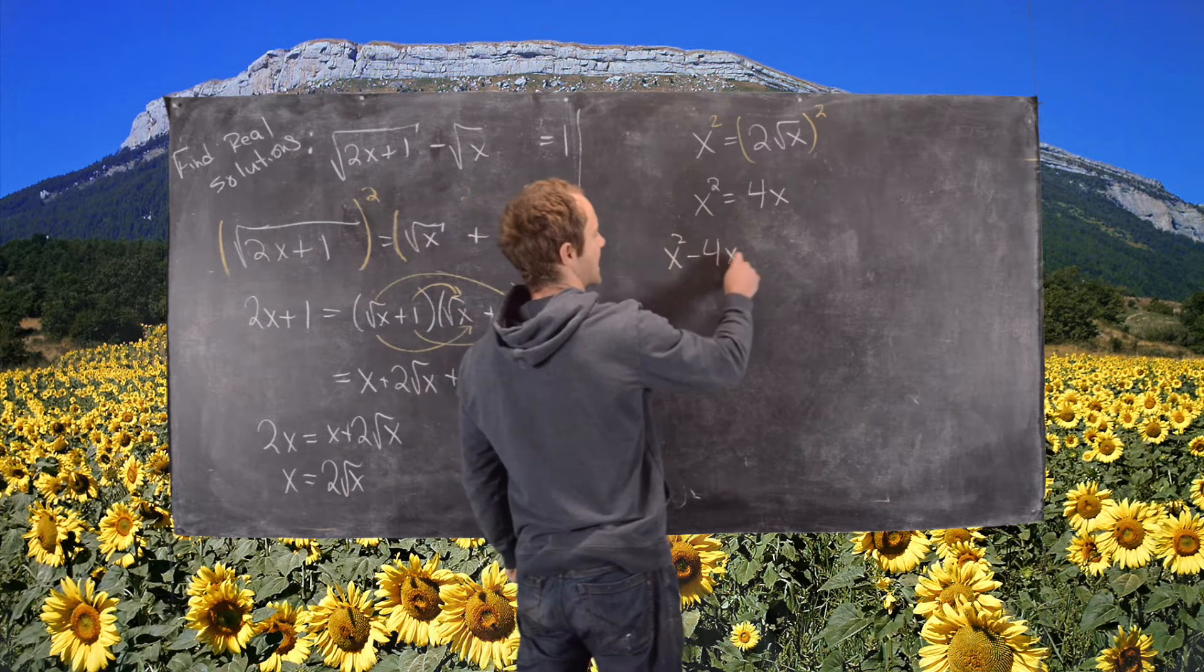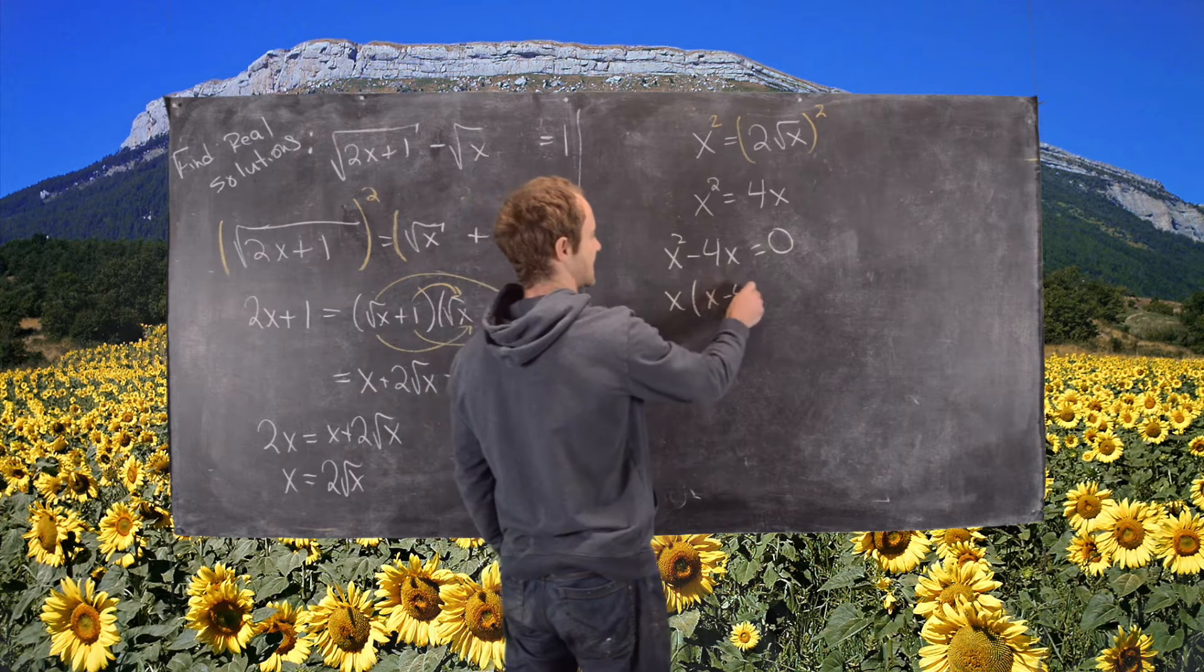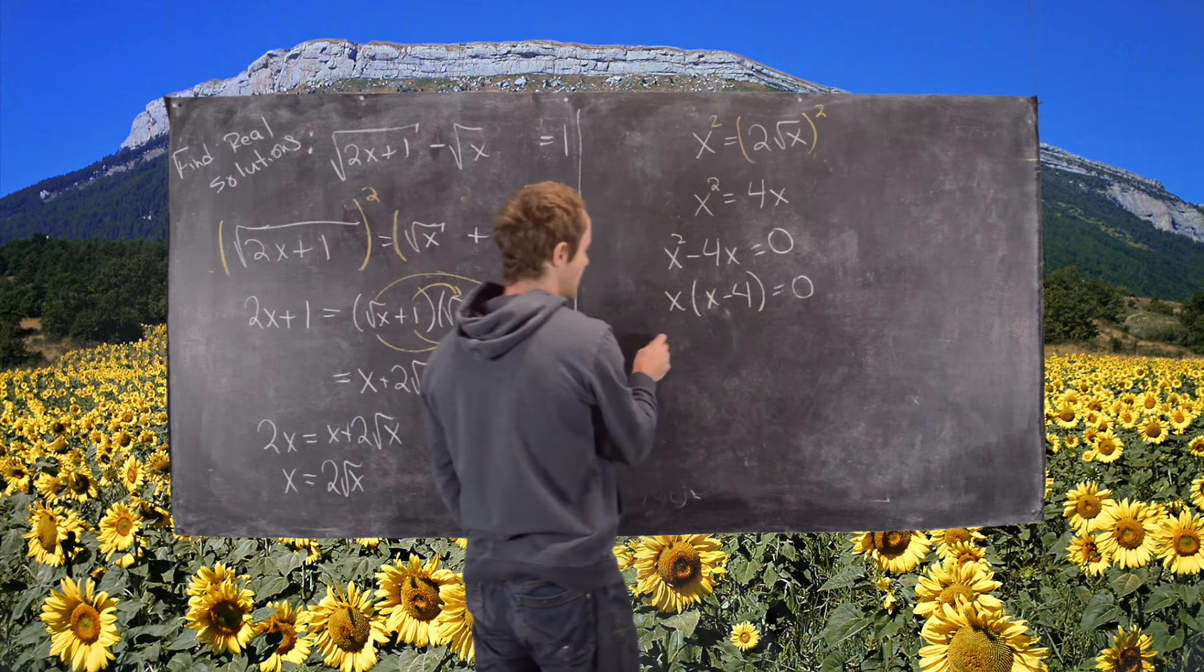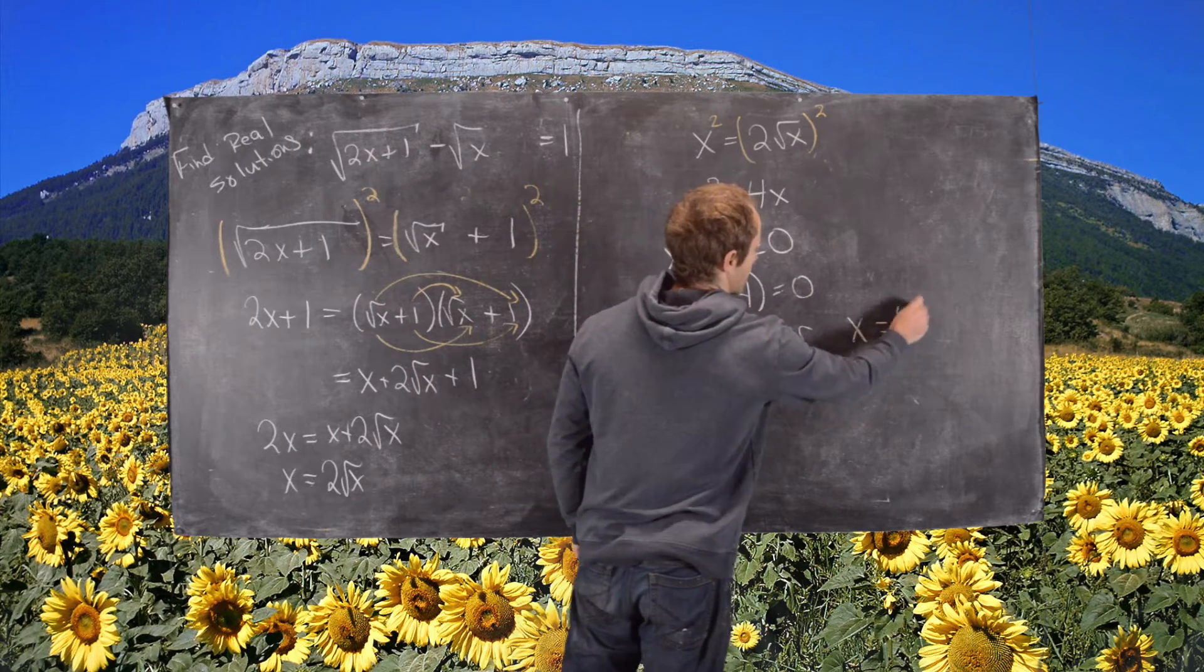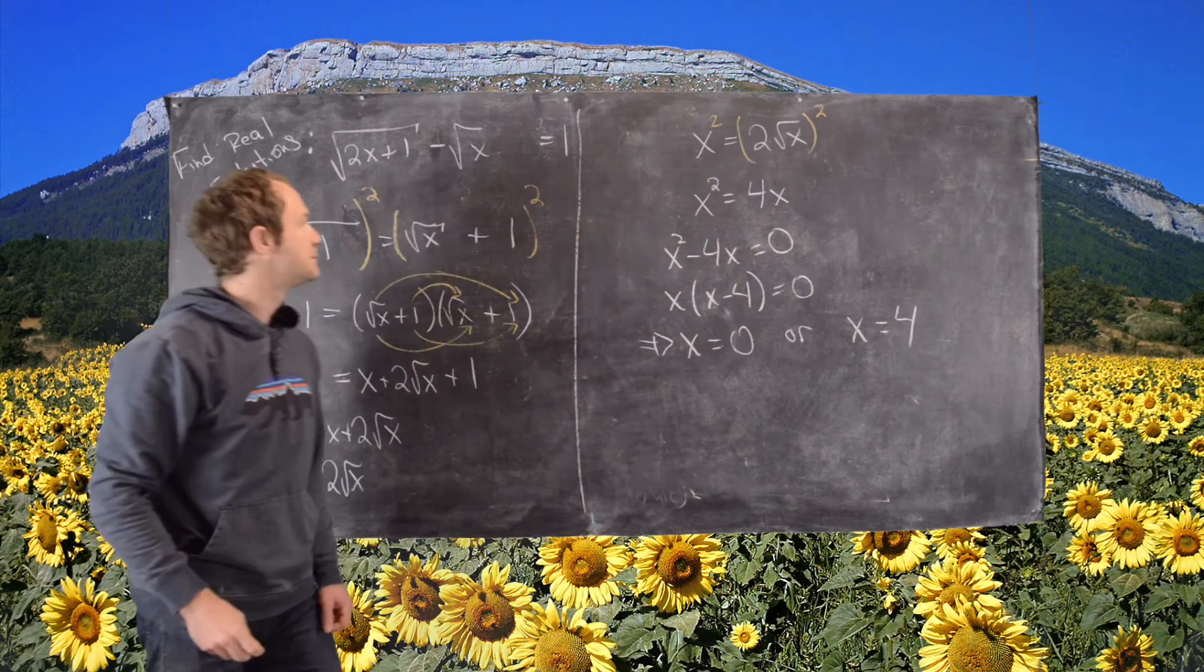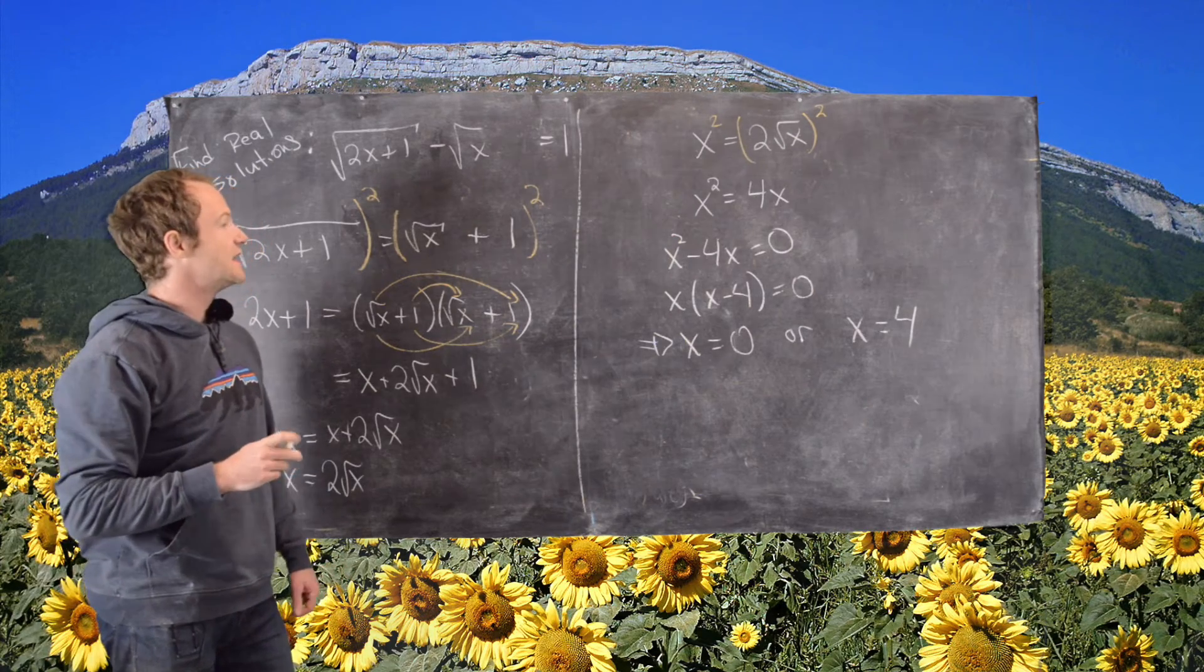Notice that's going to leave me with x squared minus 4x equals 0. We can factor that into x and x minus 4 equals 0, and that tells me that x is equal to 0 or x is equal to 4. Now the next thing we want to do is plug both of these values in to make sure they satisfy the original equation.